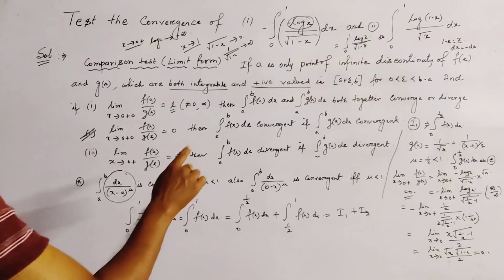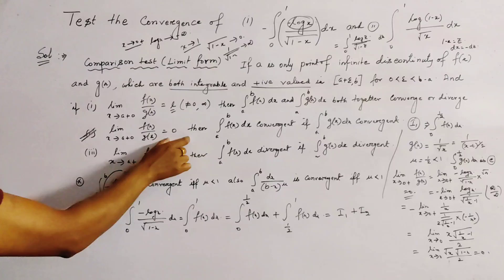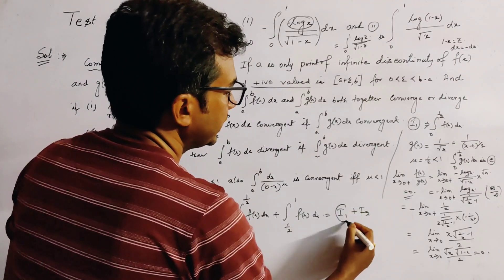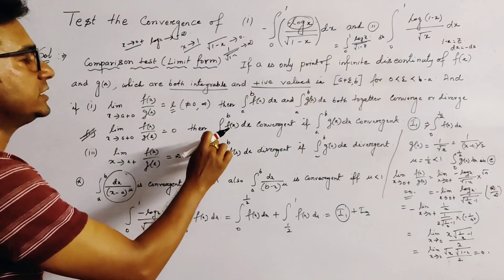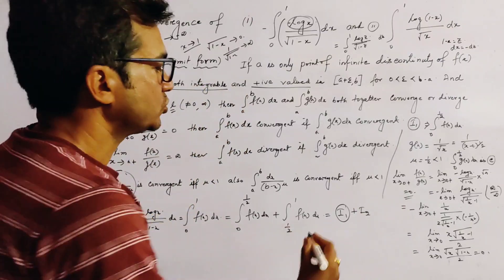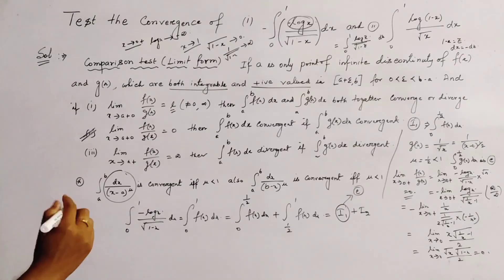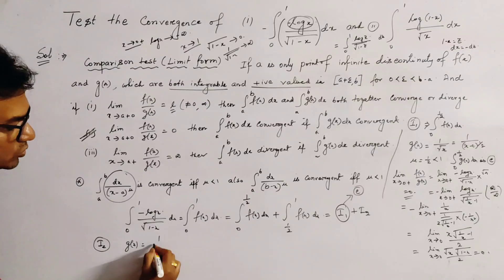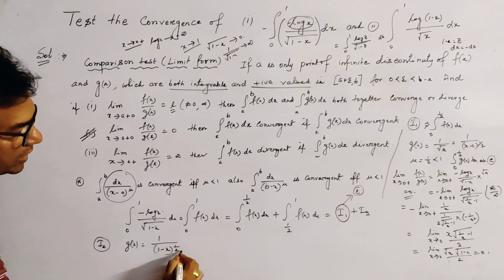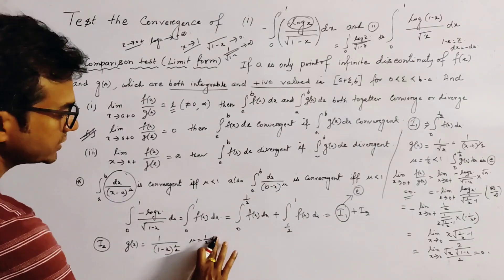So I1, which is integration 0 to 1/2 of f(x) dx, is convergent. Now we consider the case of I2. In this case, we take g(x) equal to 1 by (1 minus x)^(1/2), where μ equals 1/2, which is less than 1.